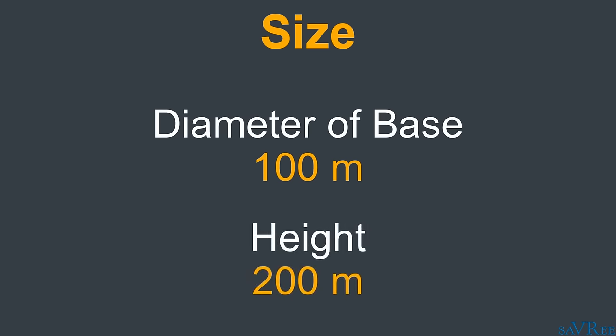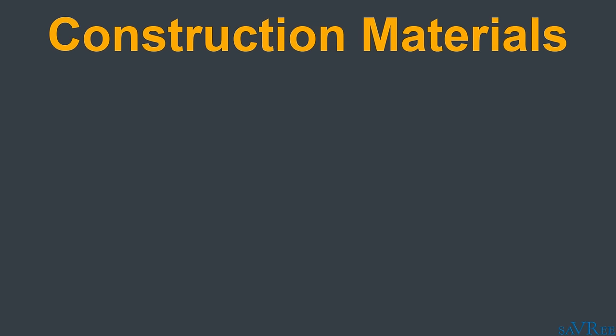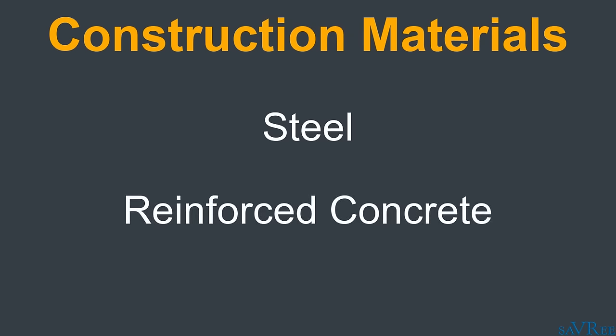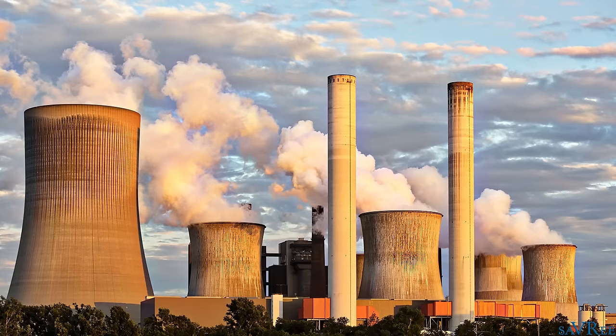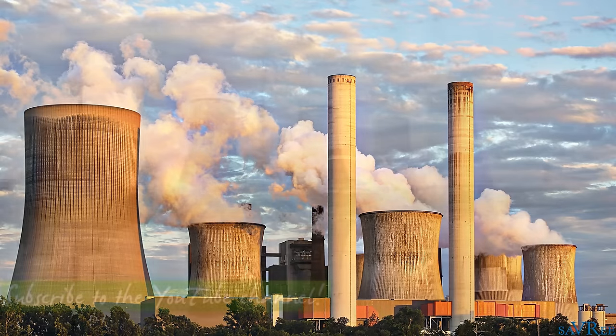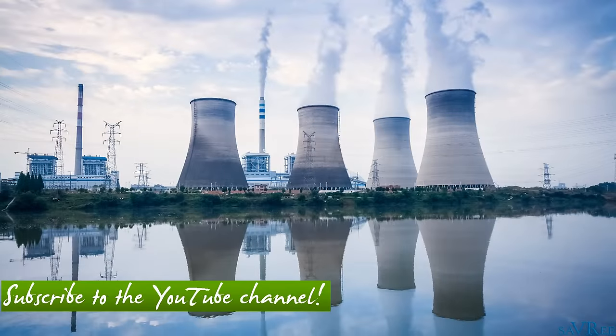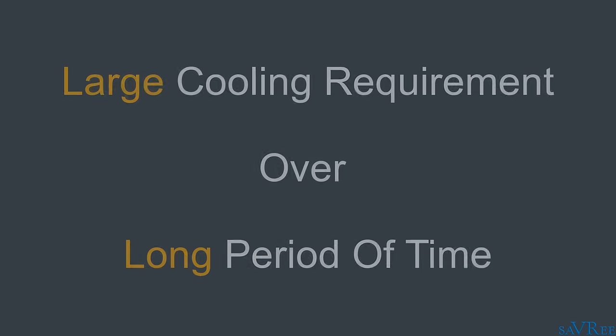Typical construction materials for natural draft cooling towers include steel and reinforced concrete. Typically, you're going to see them next to thermal power stations, for example, coal-fired power stations and nuclear power stations. That is simply because natural draft cooling towers are very expensive to construct, and they're only ever used where you have a large cooling requirement over a very long period of time, for example, 30 years. You will not see these towers being built and put into service for only two or three years. It just doesn't make economic sense.